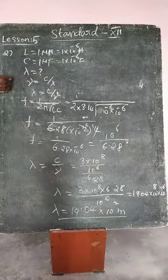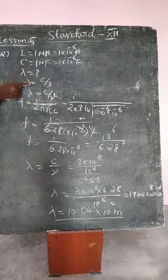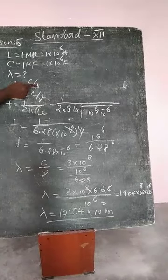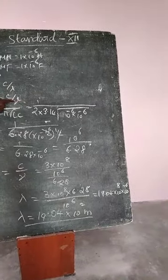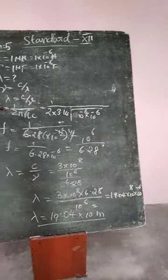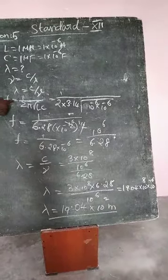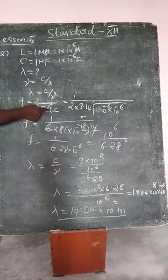To calculate the wavelength of the electromagnetic wave emitted, frequency nu equals C by lambda, so lambda equals C by nu. Frequency f equals 1 by 2 pi root of L into C.